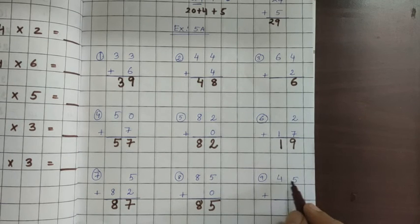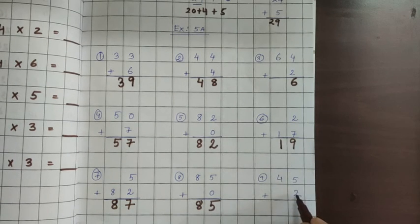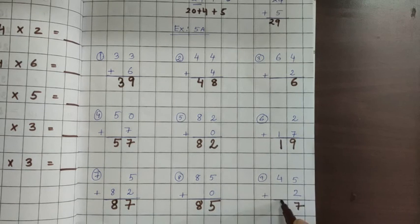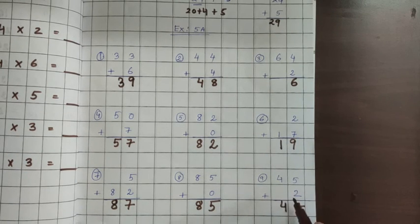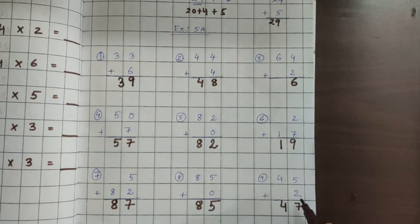Next one you see that 45 plus 2. So 5 plus 2, 5 you keep it in your mind, 2 you count forward: 5, 6, 7. And then 4 down nothing is there, 47. So this way you have to do the addition, 2 bigger digit with 1 single digit. How to do the addition or find the sum. So children, you have to practice it. I will give you the homework, exercise 5A. So it should be completed. Thank you.